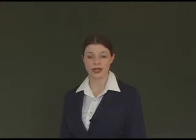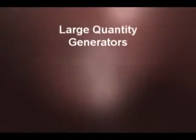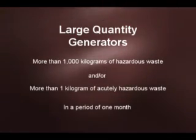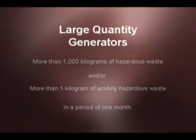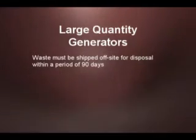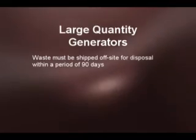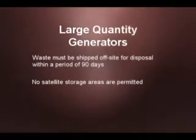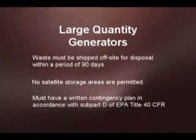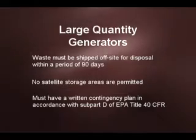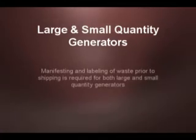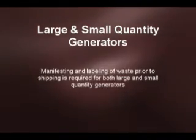Regulations governing large-quantity generators are more stringent. Large-quantity generators generate more than 1,000 kilograms of hazardous waste and/or more than 1 kilogram of acutely hazardous waste in a period of one month, and the waste must be shipped off-site for disposal within 90 days. Waste must be accumulated at the point of generation, meaning no satellite storage areas are permitted. Large-quantity generators must have a written contingency plan in accordance with Subpart D of EPA Title 40 Code of Federal Regulations. Manifesting and labeling of waste prior to shipping is required for both large- and small-quantity generators.